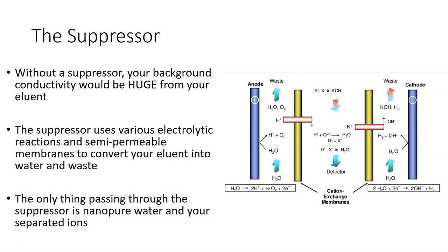The example on the right here shows a sample leaving an anion exchange analytical column in a potassium hydroxide eluent. The electrolytic reactions taking place on the sides here convert your base into water and your cations into waste. It's not super important to understand all of these reactions, but it's important to understand that the suppressor is essential to getting good conductivity measurements.